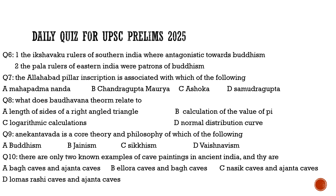Question eight: What does the Baudhayana theorem, from the Baudhayana Sulva Sutras, relate to? Options are: length of sides of a right-angle triangle, calculation of the value of pi, normal distribution curve, or logarithmic calculations. It is not pi, not normal distribution, and not logarithms. It relates to the length of sides of a right-angle triangle — similar to the Pythagorean theorem. Correct answer is option A.